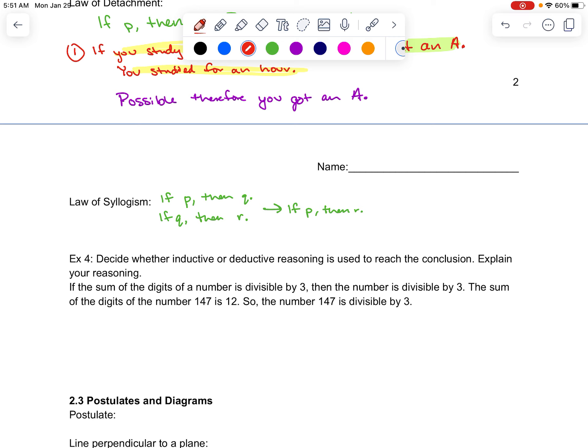To give you an example here, if you have a test tomorrow, then you will study. If you study, you will get an A. Sorry, I was trying to make those short. So, we know that this is the law of syllogism because it's two if statements. And we look at that order.